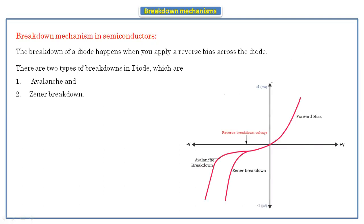Looking at the characteristics of the diode, the forward bias characteristics are the same for the Zener diode as well as the PN junction diode. There are two breakdown mechanisms. The Zener breakdown occurs at a certain position — up to that point, very little current flows. After reaching that particular voltage, the voltage remains constant but the reverse current increases drastically. This voltage is called the reverse breakdown voltage. If the breakdown occurs at the lower voltage position, that is Zener breakdown; at the higher voltage position, it is avalanche breakdown.